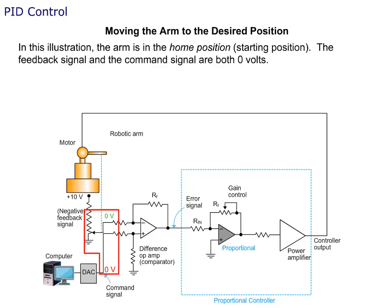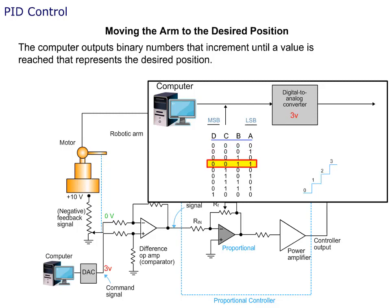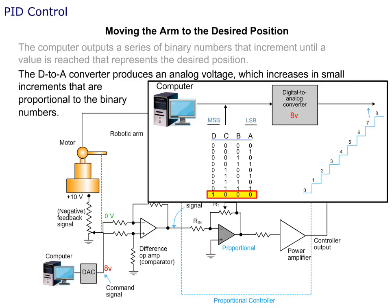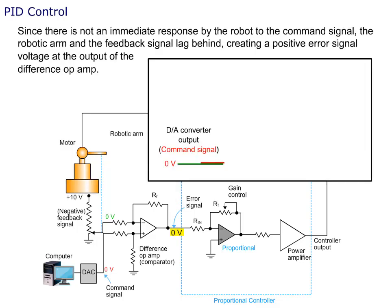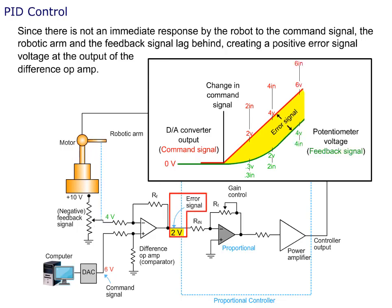In this illustration, the arm is in the home position or starting position. The feedback signal and the command signal are both zero volts. To move the arm from the home position to another position, a command signal is produced by the computer. The computer outputs binary numbers that increment until a value is reached that represents the desired position. The D-to-A converter produces an analog voltage which increases in small increments proportional to the binary numbers. Since there is not an immediate response by the robot to the command signal, the robotic arm and the feedback signal lag behind, creating a positive error signal voltage at the output of the difference op amp.